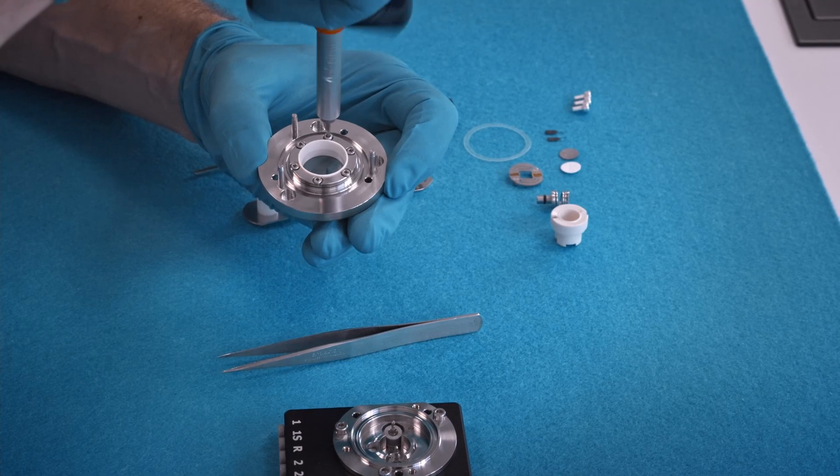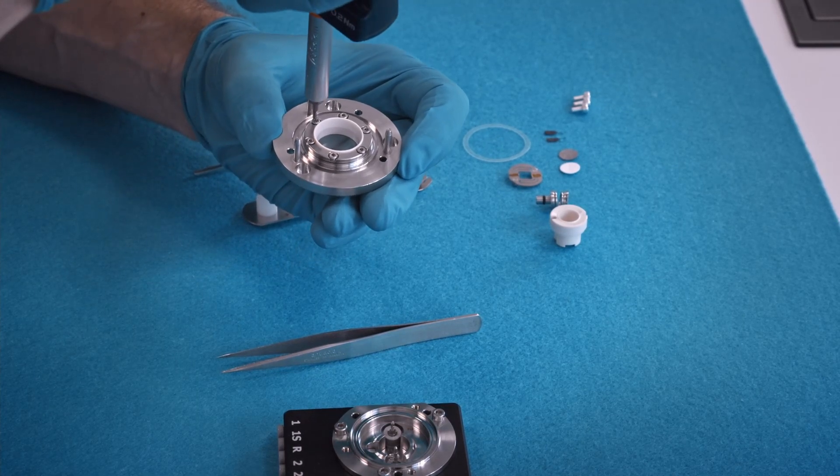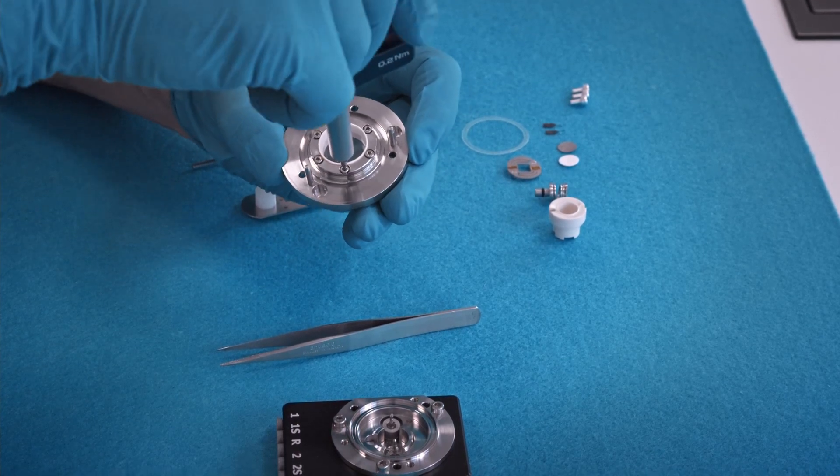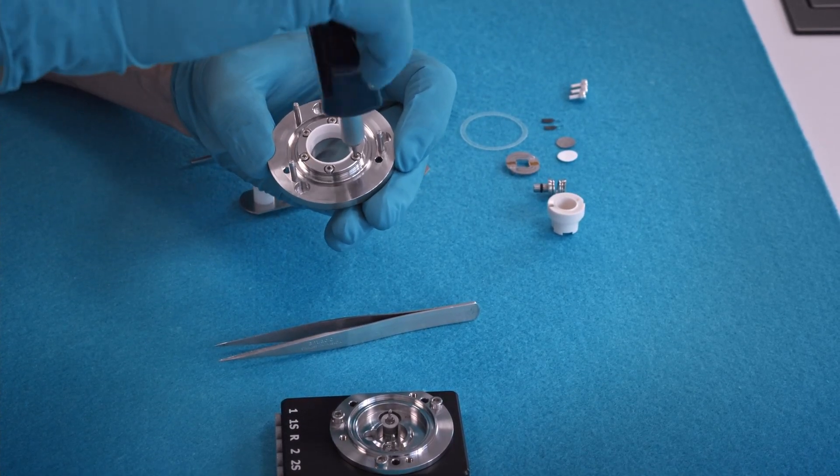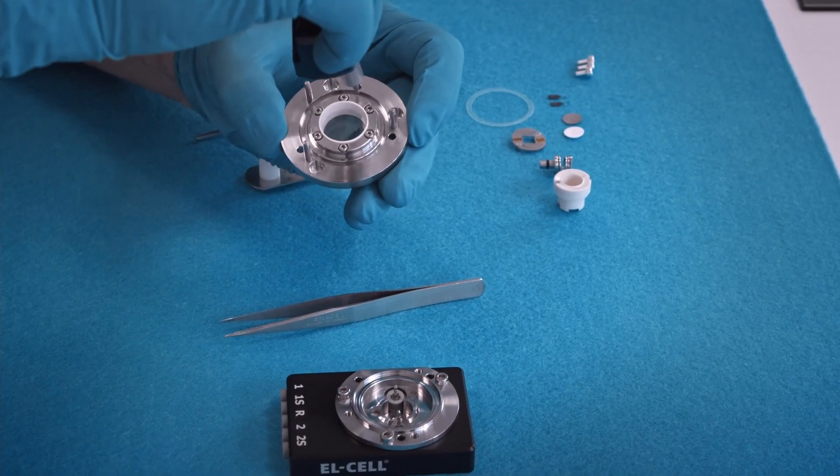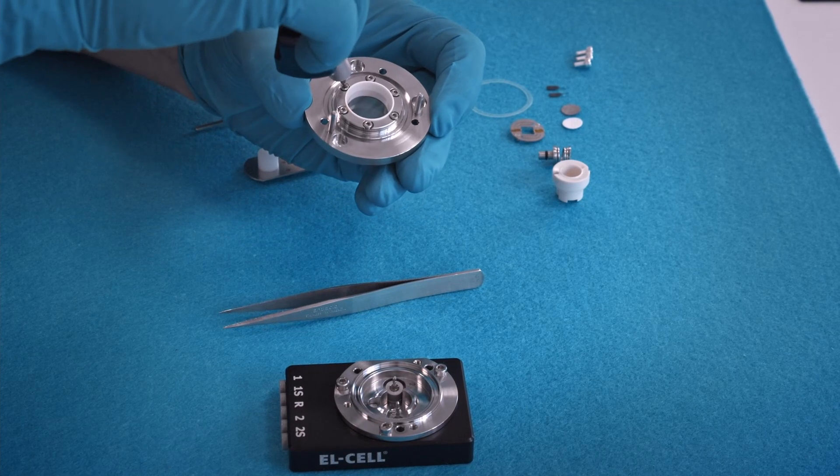And finally, tighten the screws until you hear the wrench click. This is to make sure that you don't break the brittle window.